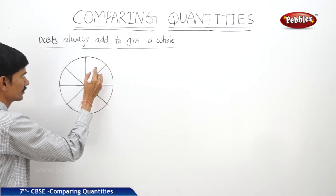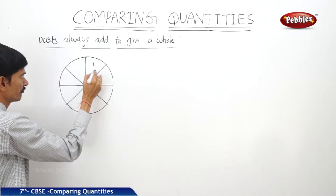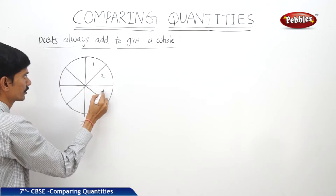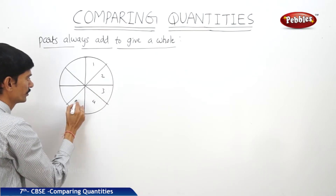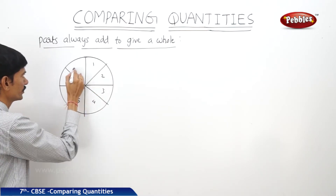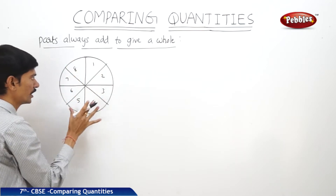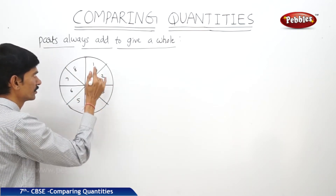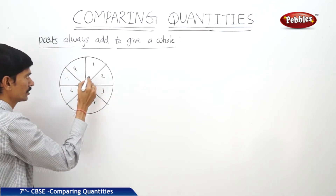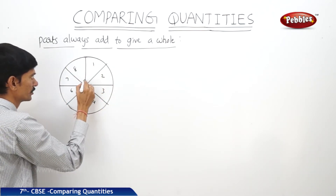There are 8 equal sectors: 1, 2, 3, 4, 5, 6, 7, 8. So out of these 8 sectors, 2 sectors are shaded.